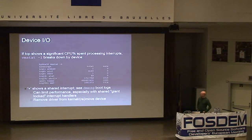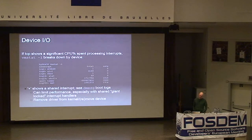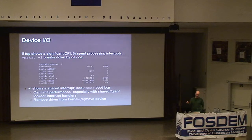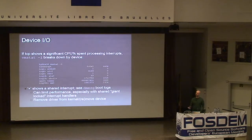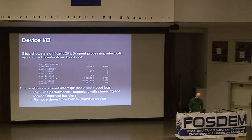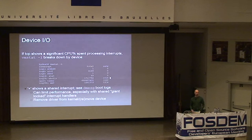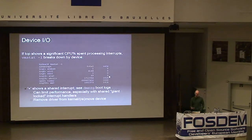The third topic is device I/O. This will show up in top as a large amount of time spent processing interrupts. The vmstat -i command will break this down by device, telling you exactly what interrupts are firing to generate the high load. In this example, we see 1,000 interrupts firing on IRQ 19, and the plus sign after the device name indicates it's a shared interrupt being shared by multiple devices.